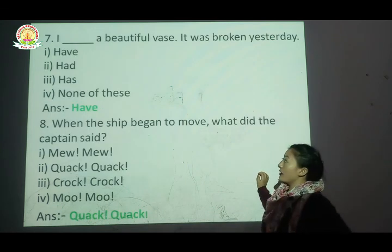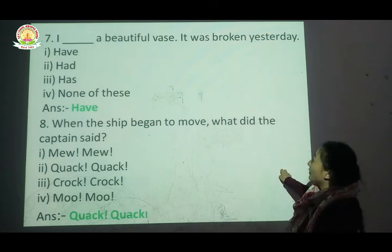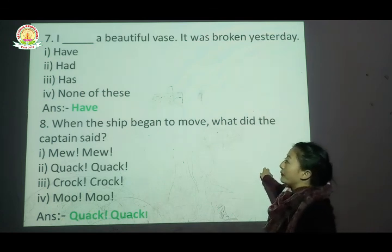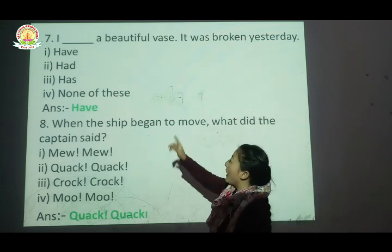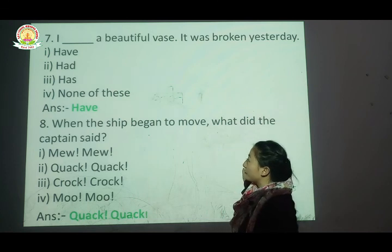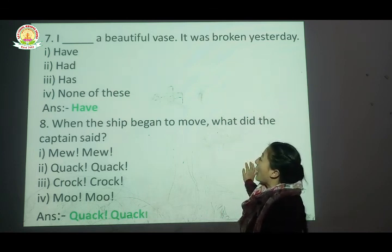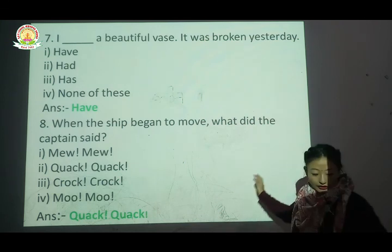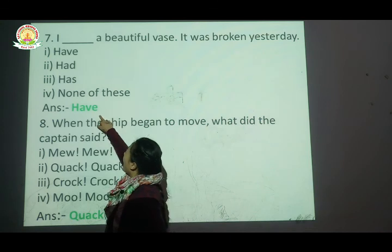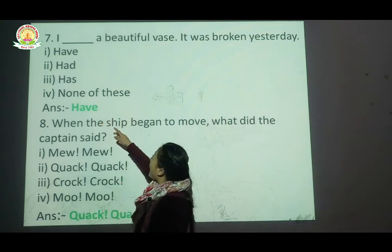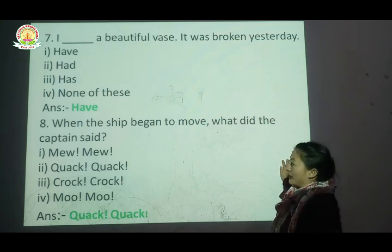Question number seven: I blank a beautiful vase — it was broken yesterday. Options are: have, had, has, or none of these. The correct answer is had. If a wrong answer is written, cross it out and write: I had a beautiful vase. It was broken yesterday.